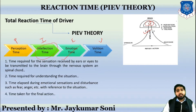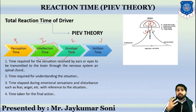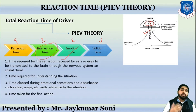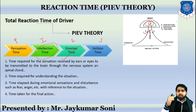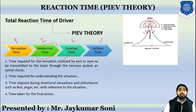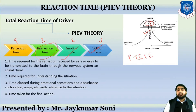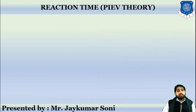Last is about volition time. After all the understanding is done, your mind will send a signal to the body that a reaction should be taken. The time elapsed during the final action-taking phase is called volition time. So: perception time, intellectual time, emotion time, and volition time — this is all about the PIEV theory.